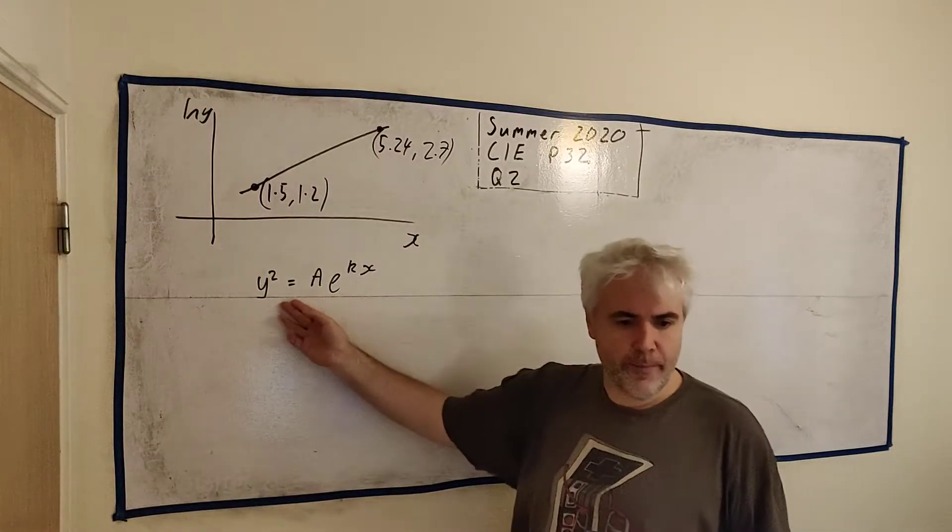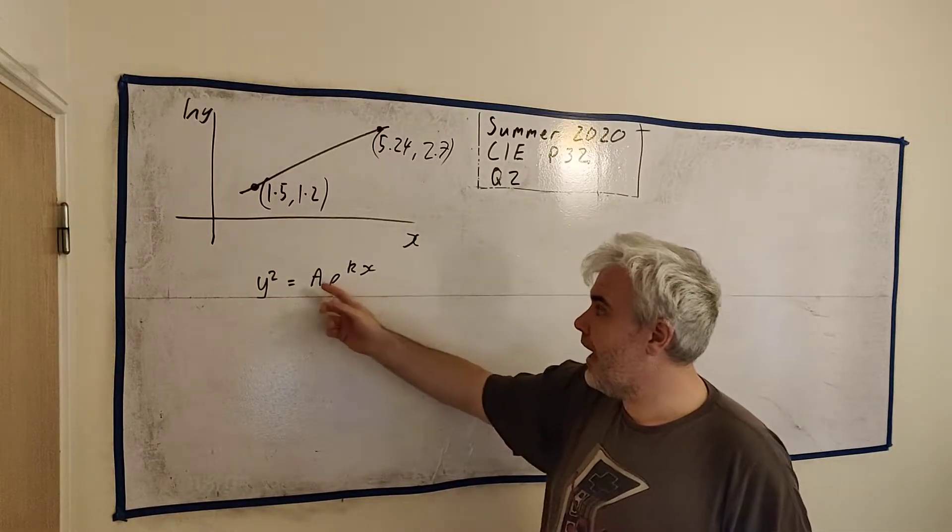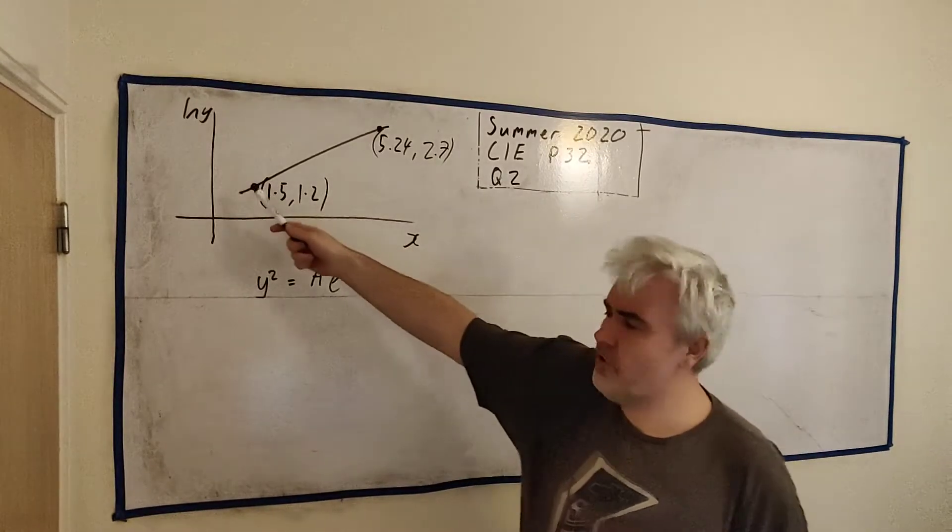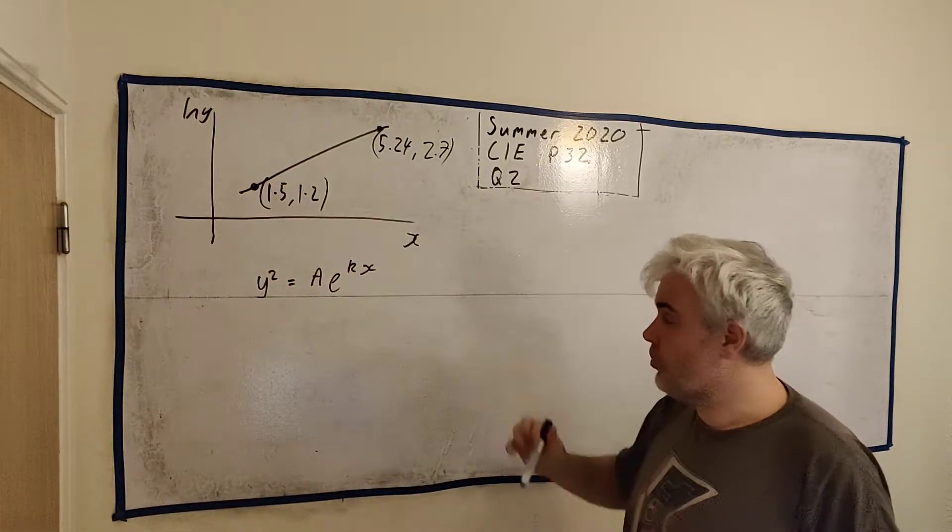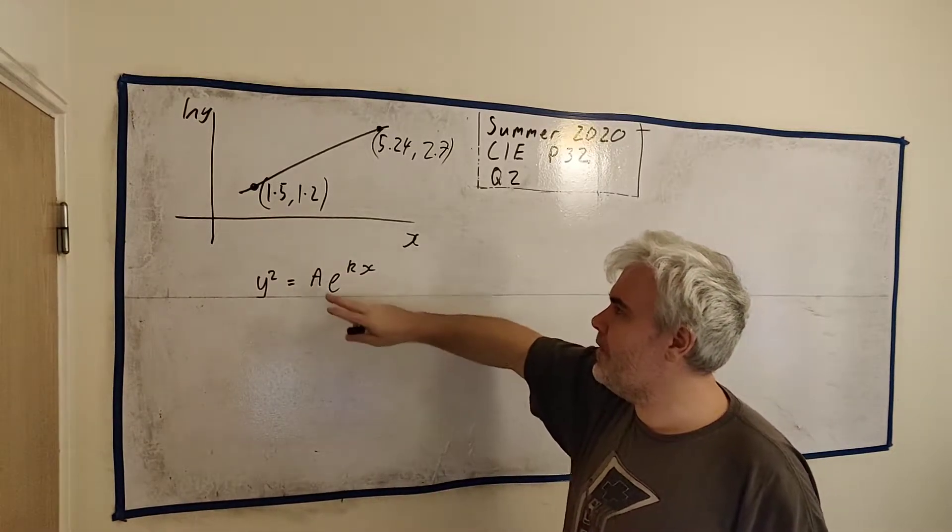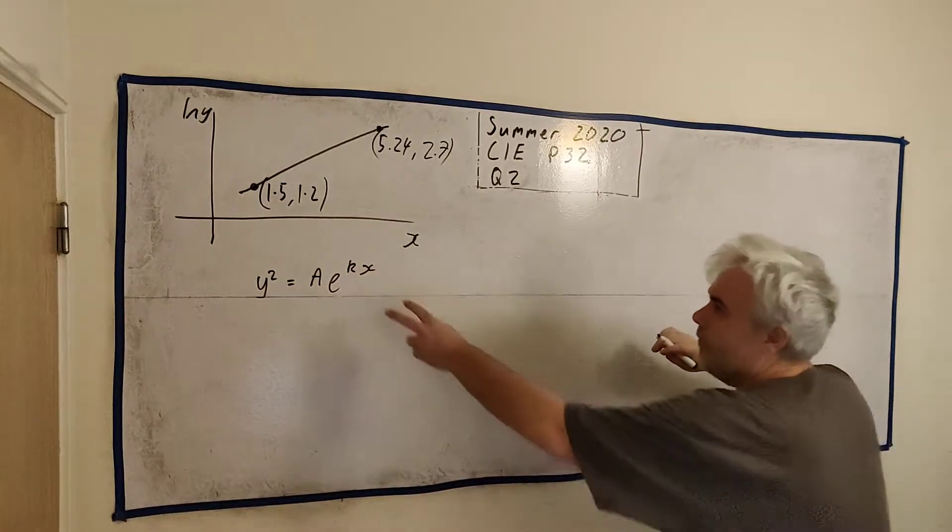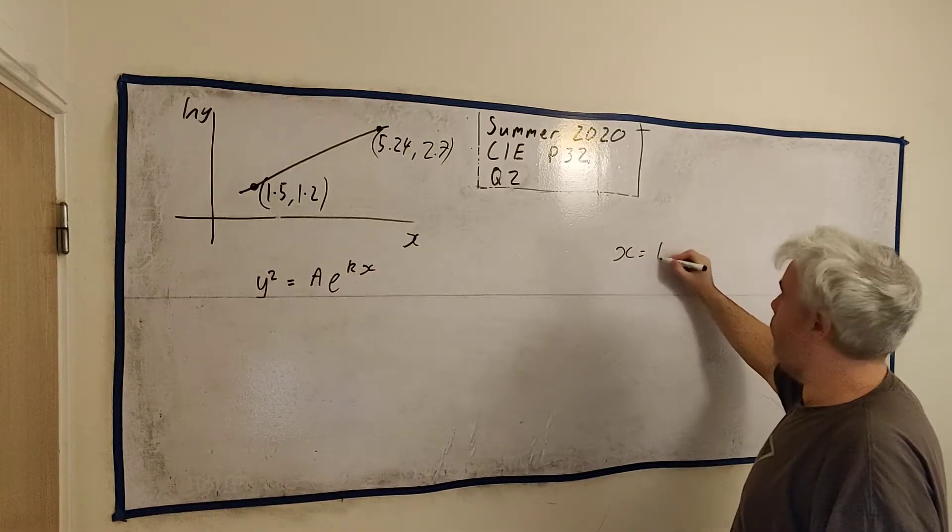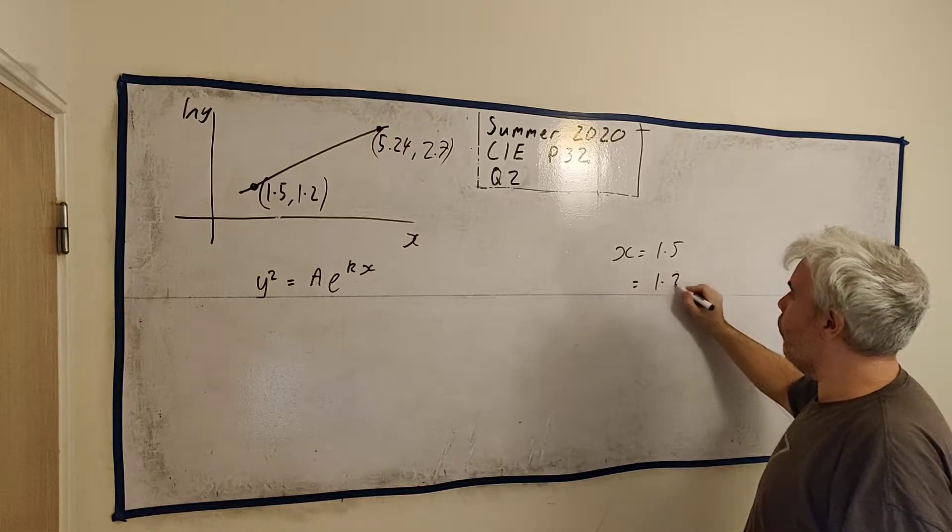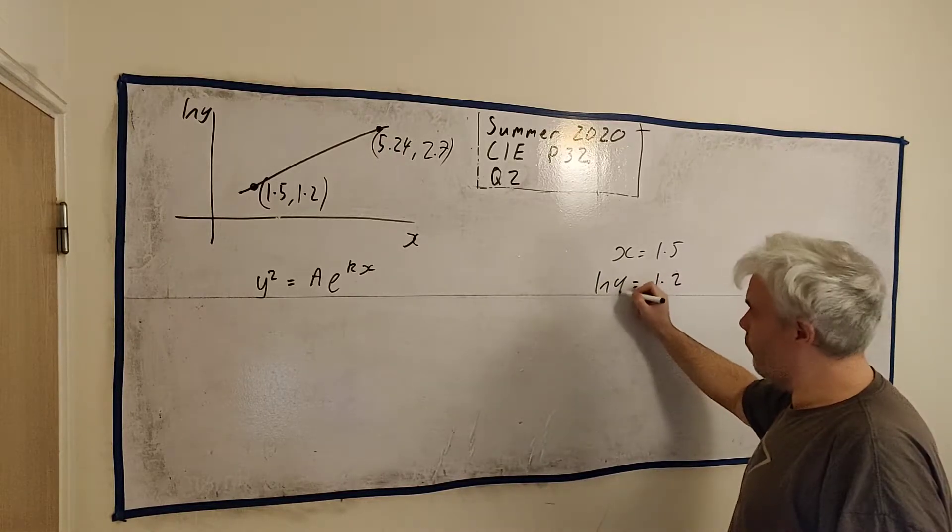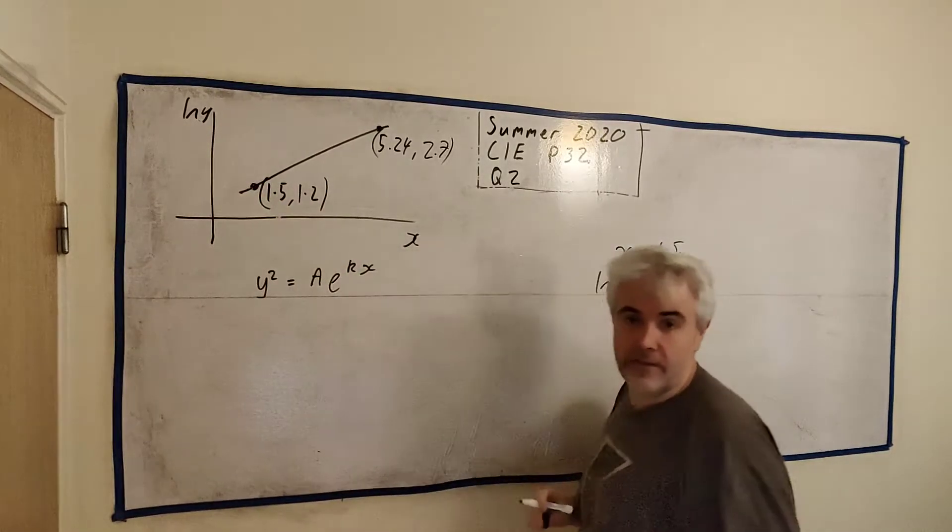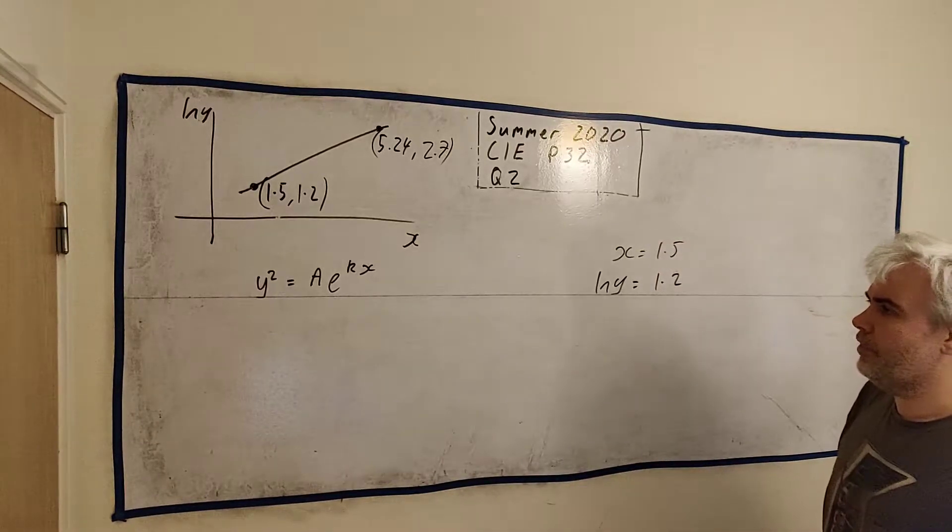In this question they give us this equation y² = Ae^(kx) and ask us to find A and k. To help us with that information they also give us this picture. Now it's important to note in this picture they give us x-axis and natural log of y. This number here, x equals 1.5, at the same time natural log of y equals 1.2, not y equals 1.2, because that's what's in that axis.